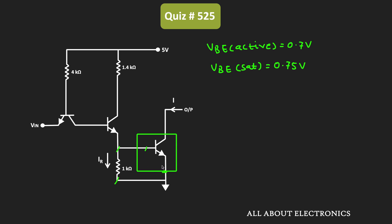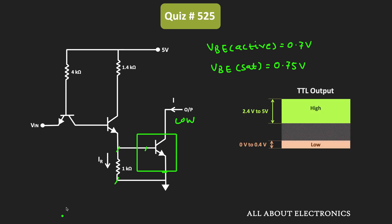And to find that, we have been given two more conditions. We have been given that the output of this transistor is equal to logic low. We know that in the TTL gate, when the output voltage is between 0 to 0.4V, then it can be considered as logic zero. That means in this condition, the output voltage VC across this transistor will be between 0 to 0.4V, and when the output voltage is in this range, it means that the given transistor is operating in saturation.